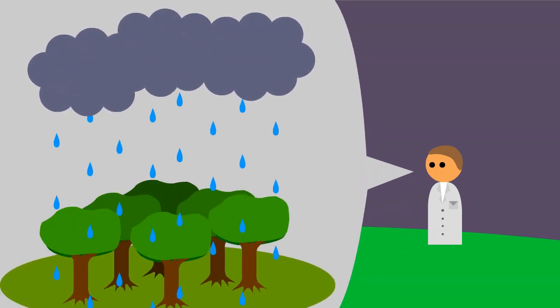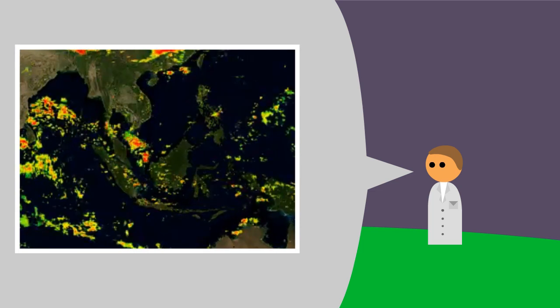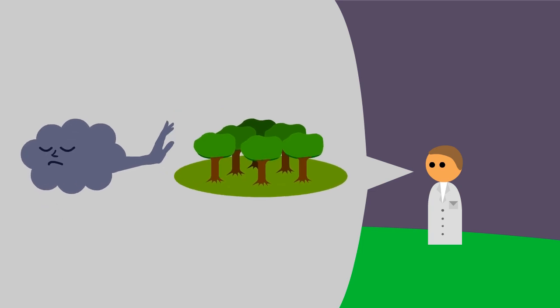Forests grow where there is ample precipitation, but they do not cause that precipitation. It comes because of winds that are governed by geomechanical processes which have nothing to do with where the forests are and aren't.